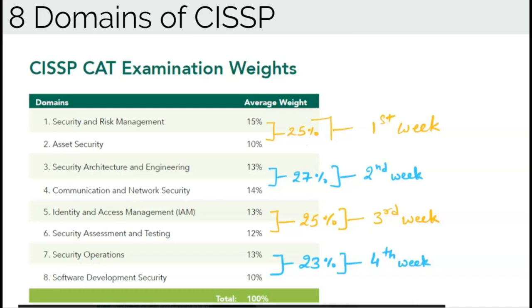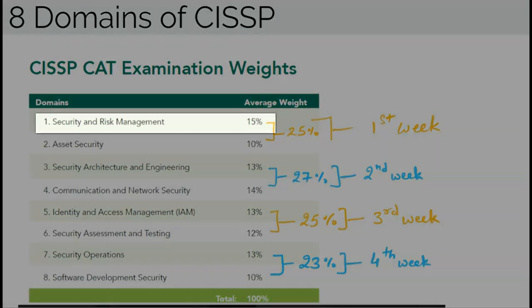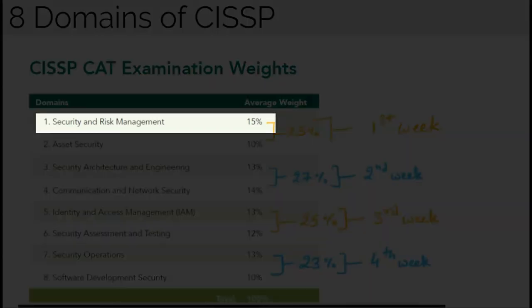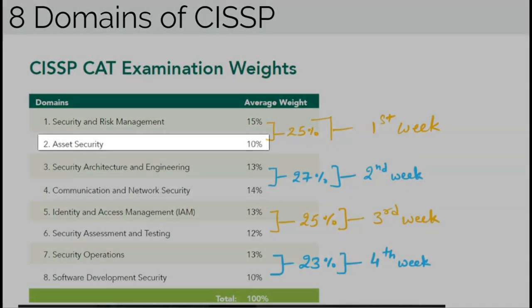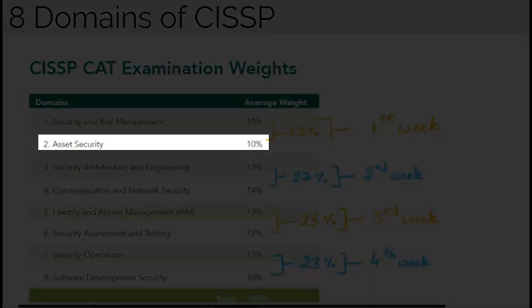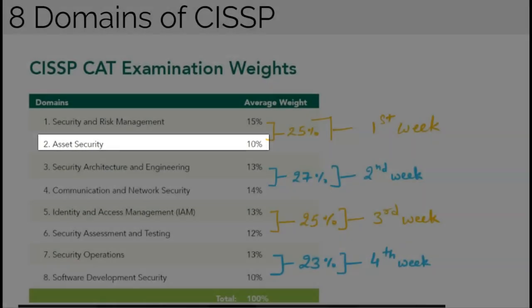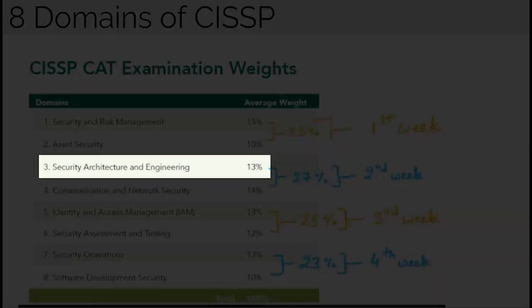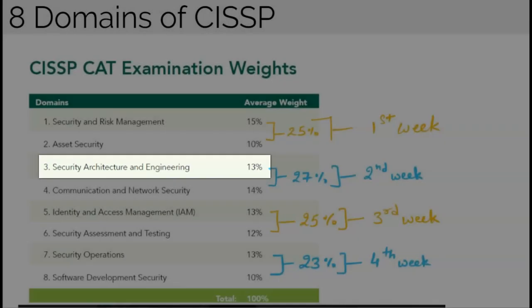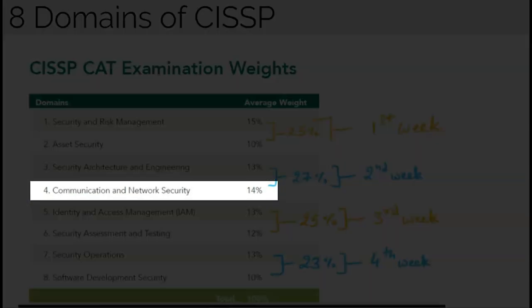The eight domains of CISSP as per the CBK are: Domain 1 covers Security and Risk Management with a weight of 15%. Domain 2 covers Asset Security with a weight of 10%. Domain 3 covers Security Architecture and Engineering with a weight of 13%.